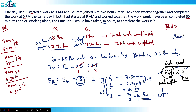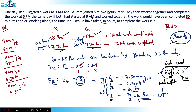Let me recap quickly. Rahul 8 hours, Gotham 6 hours. Both start 9am — both work 7.5 hours. Gotham worked 1.5 hours less; Rahul compensated with 0.5 hours more. Time ratio 1:3, efficiency ratio 3:1. Combined 4 efficiency, time 7.5 hours → at 1 efficiency 30 hours → at 3 efficiency 10 hours. That's the answer.